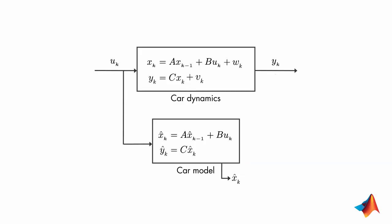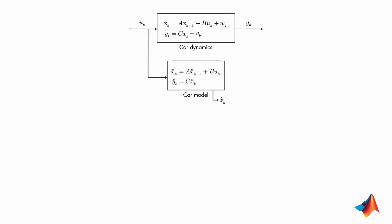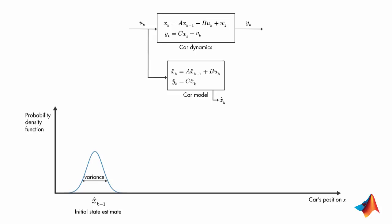We'll discuss the working principle of the Kalman filter visually with the help of probability density functions. At the initial time step k-1, the actual car position can be anywhere around the estimate x hat k-1, and this uncertainty is described by this probability density function. What this plot also tells us is that the car is going to be most likely around the mean of this distribution.